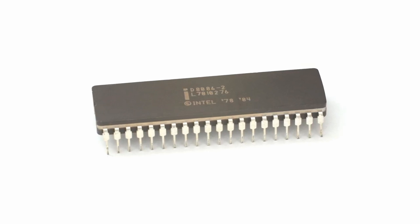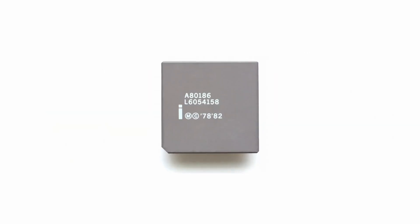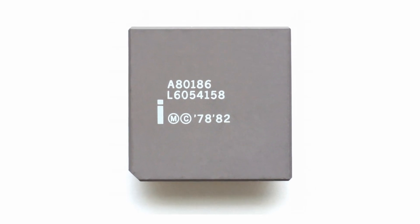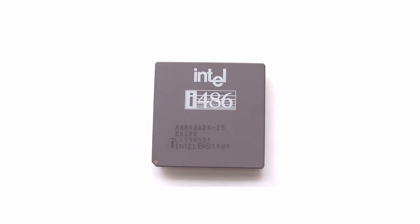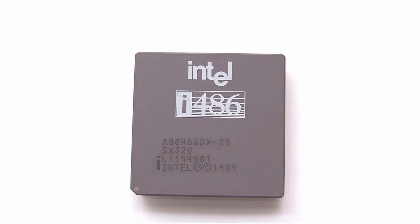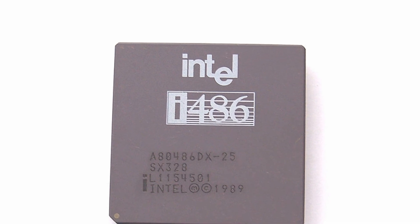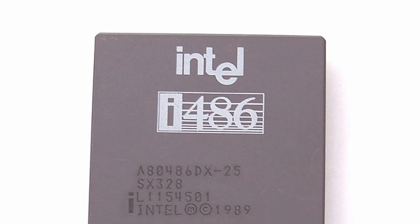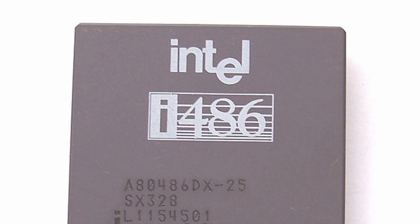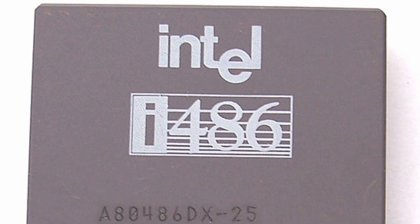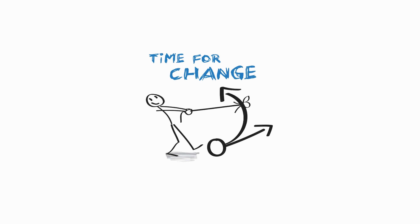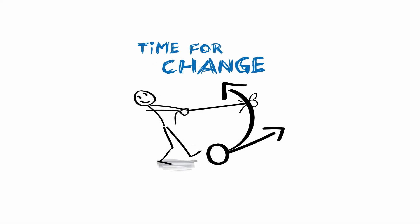This numbering would continue with Intel's subsequent microprocessors — the 8086, 8186, 8286, 8386, 8486 — with each new design jumping 100 to indicate the ushering in of a new phase. But after that, things changed. Why?